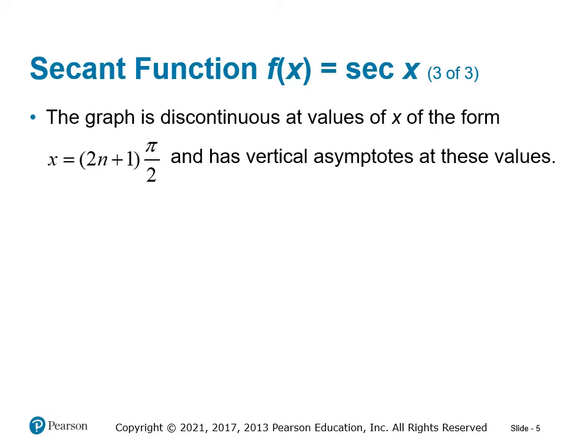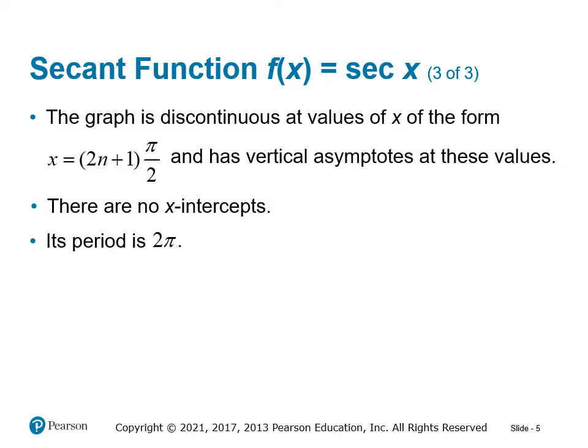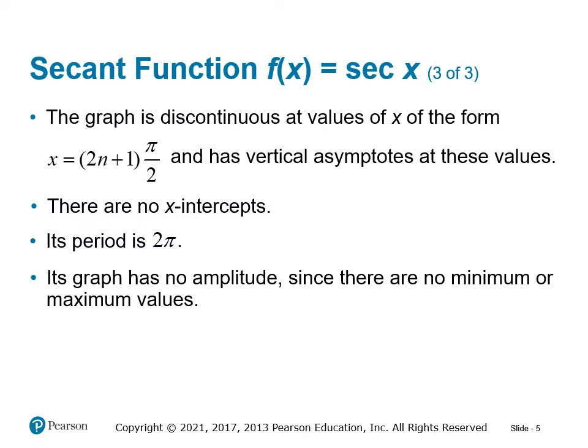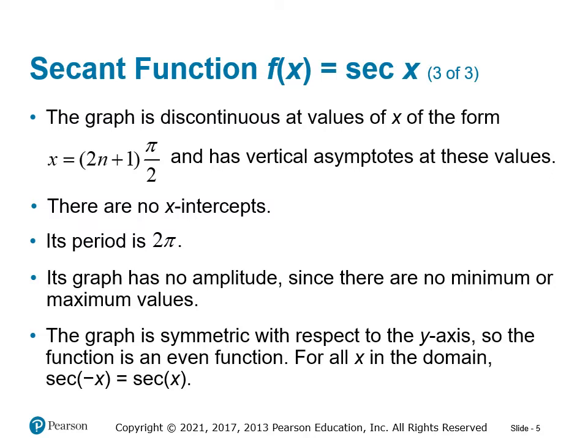We've already talked about where the x-intercepts of cosine will be the asymptotes of secant. There are no x-intercepts for secant, because we have just parabolas above or below the x-axis. Its period is also 2π since it's the reciprocal of cosine. The graph doesn't have an amplitude since there are no minimum or maximum values — it continues infinitely in the positive and negative directions. The graph is symmetric with respect to the y-axis, so the function is an even function.